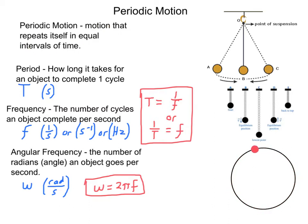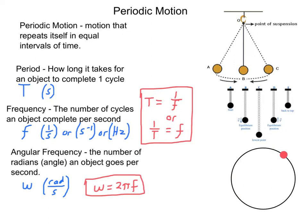That means if it takes one second for something to happen, it's going to do that exact same thing each second. For example, notice this is a periodic motion. The ball is going round and round and round. Notice the motion is repeating itself going around the circle.